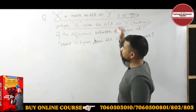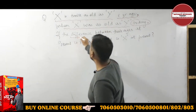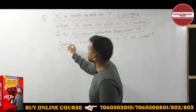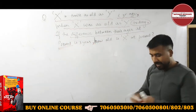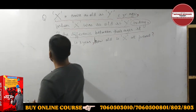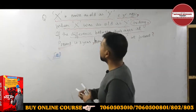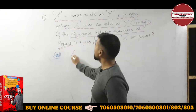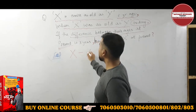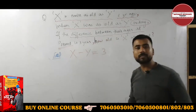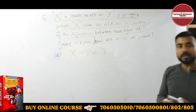If the difference between their ages at present — what does the present situation mean? Look at the solution. What is the present situation? The difference of their ages: if you subtract Y's age from X's age, you will get 3.